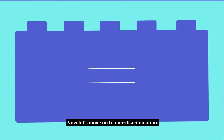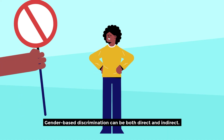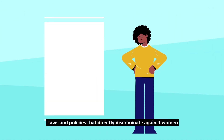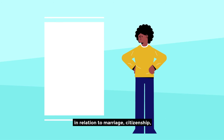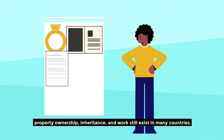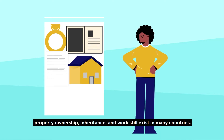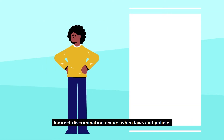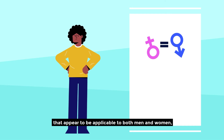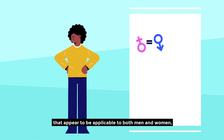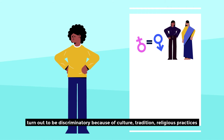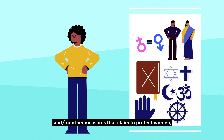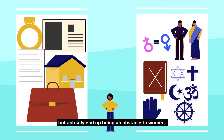Now let's move on to non-discrimination. Gender-based discrimination can be both direct and indirect. Laws and policies that directly discriminate against women in relation to marriage, citizenship, property ownership, inheritance, and work still exist in many countries. Indirect discrimination occurs when laws and policies that appear to be applicable to both men and women turn out to be discriminatory because of culture, tradition, religious practices, and or other measures that claim to protect women but actually end up being an obstacle to women.